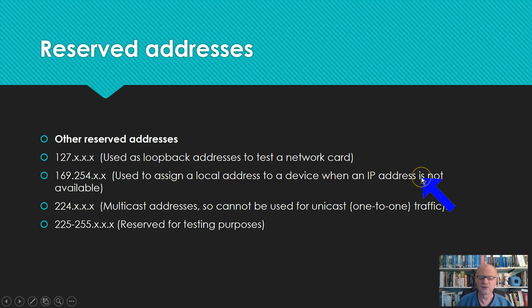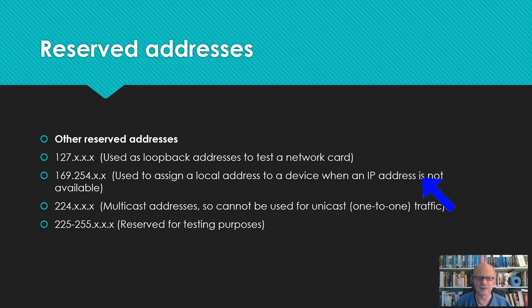I cannot use 169.254.anything. These are used to assign a kind of dummy address when the computer doesn't get an IP address — for example, if it can't talk to your router. The router cannot assign it an IP address via DHCP, Dynamic Host Control Protocol. If it cannot contact a DHCP server, there's nobody to give it an address, so it will assign itself something in the 169.254 range, hoping it can at least talk locally to anyone else in that range.